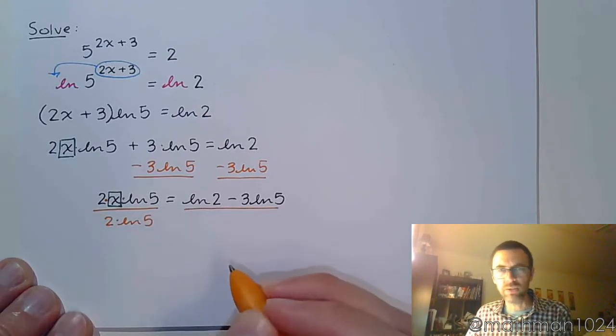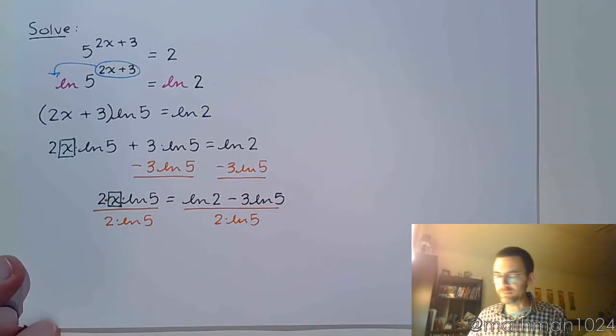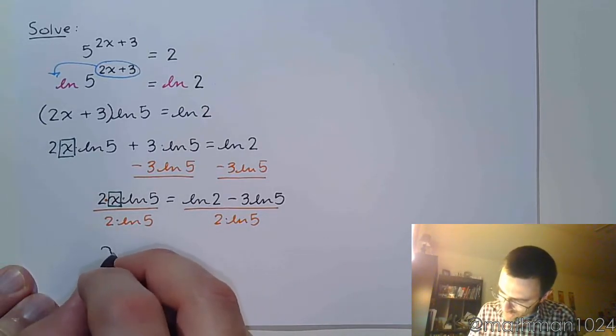So divide by 2 natural log of 5. And that's going to be a product that you're dividing by. So divide by 2 natural log of 5. So as long as we've done everything correctly,